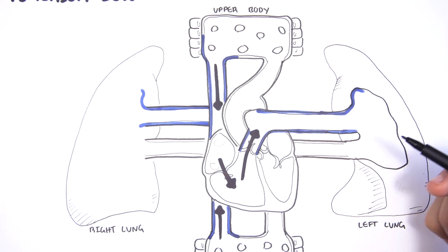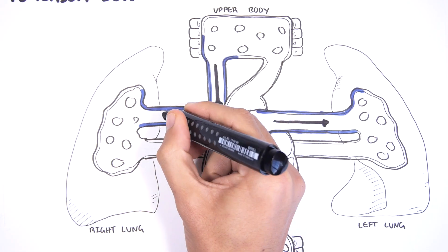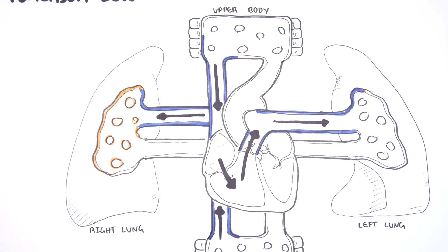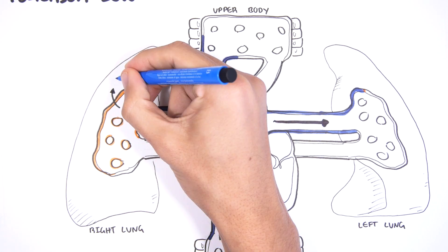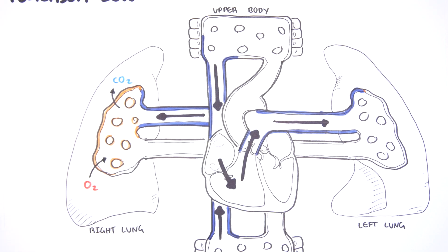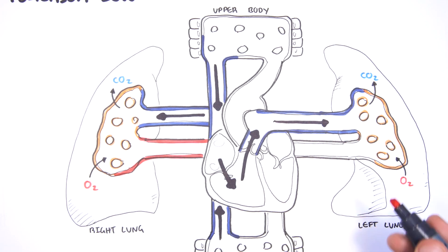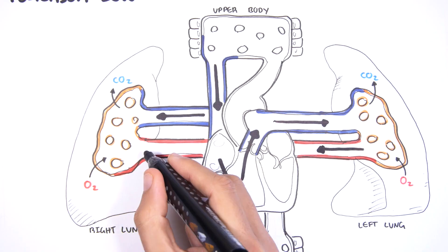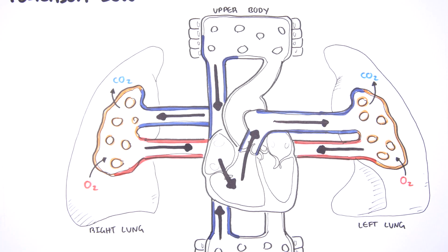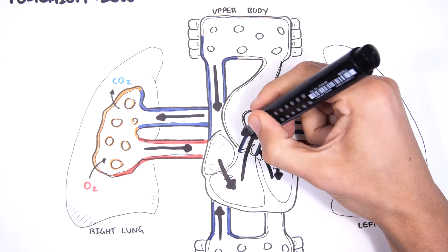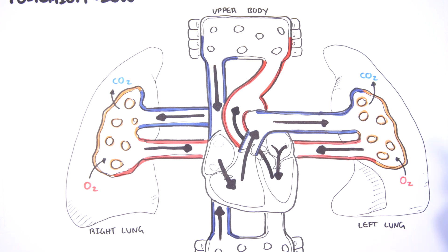Here I'm drawing the right lung and the left lung. This deoxygenated blood undergoes gas exchange within the lungs — carbon dioxide is released and the lungs reoxygenate the blood with oxygen. The oxygenated blood returns to the left side of the heart — to the left atrium, then the left ventricle. From the left ventricle, blood is pumped up the aorta to the upper body or to the lower body.